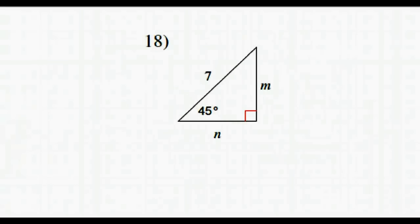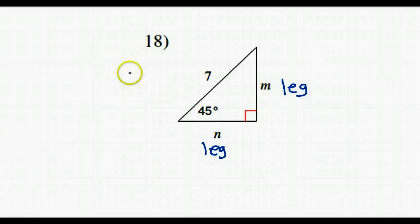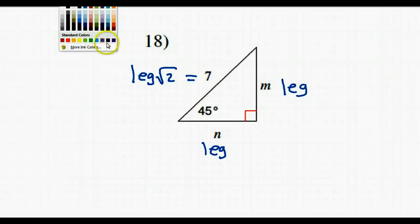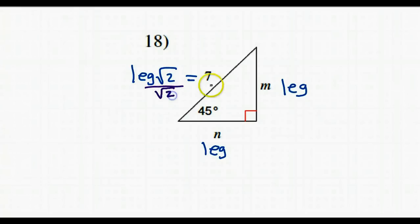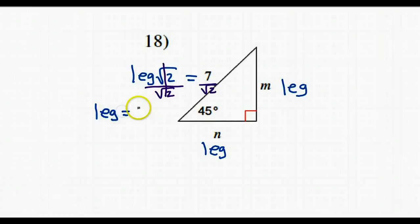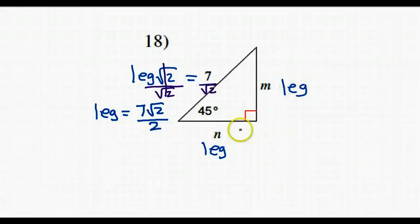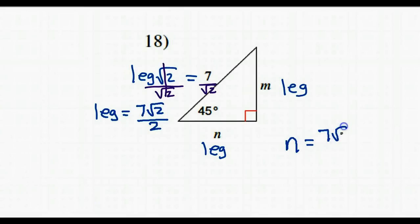Number 18 is a 45-45-90 triangle. The rule is leg, same leg, and leg radical 2 for the hypotenuse. Seven is the hypotenuse, so divide both sides by radical 2. That gives the leg equals 7 radical 2 over 2. Both legs are equal, so both equal 7 radical 2 over 2. Therefore N equals 7 radical 2 over 2.